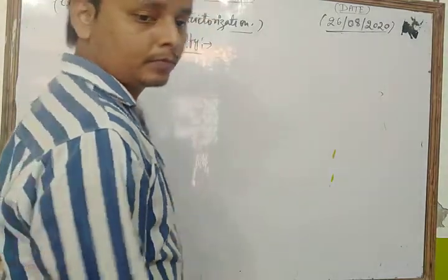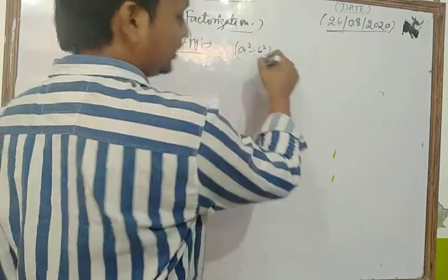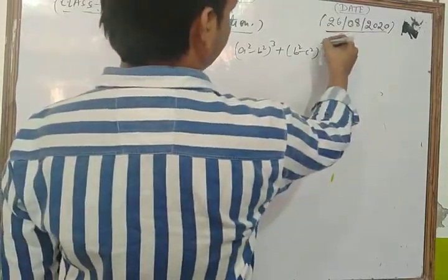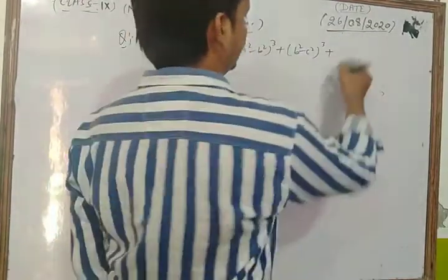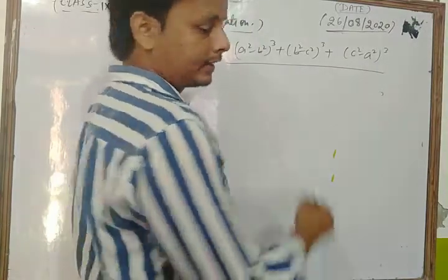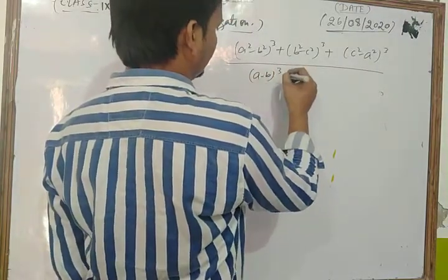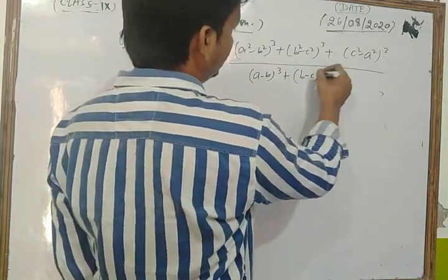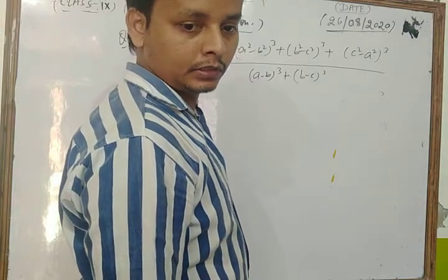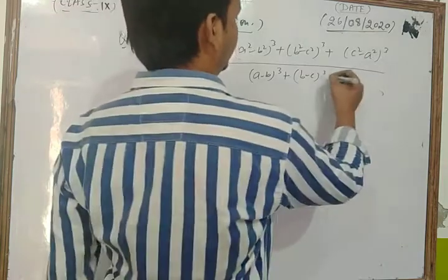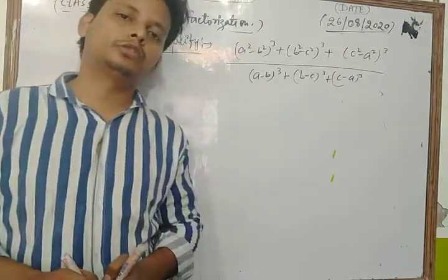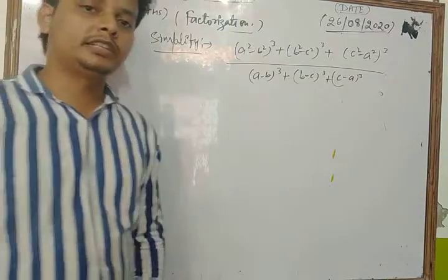The next important question is: simplify [(a² - b²)³ + (b² - c²)³ + (c² - a²)³] / [(a - b)³ + (b - c)³ + (c - a)³]. Please concentrate very carefully on its solution.